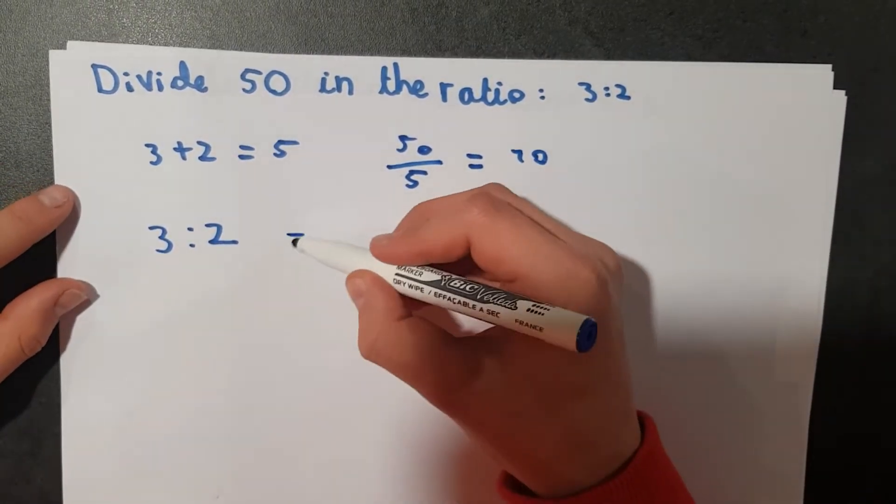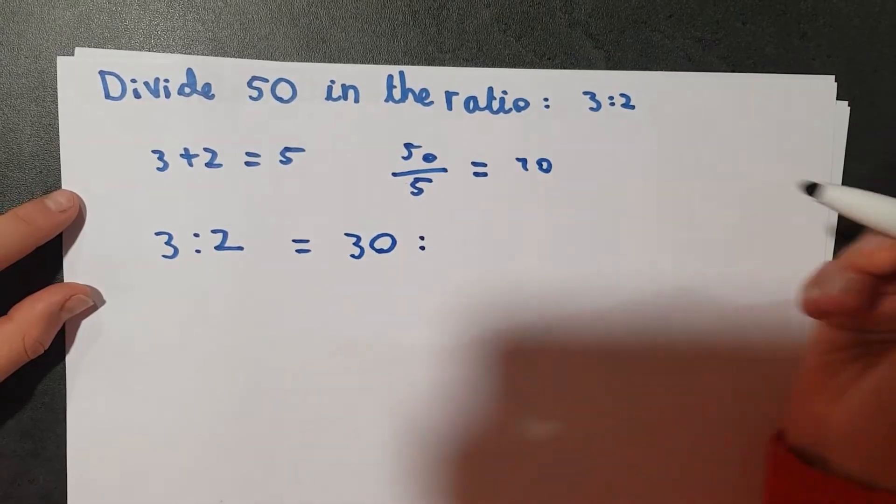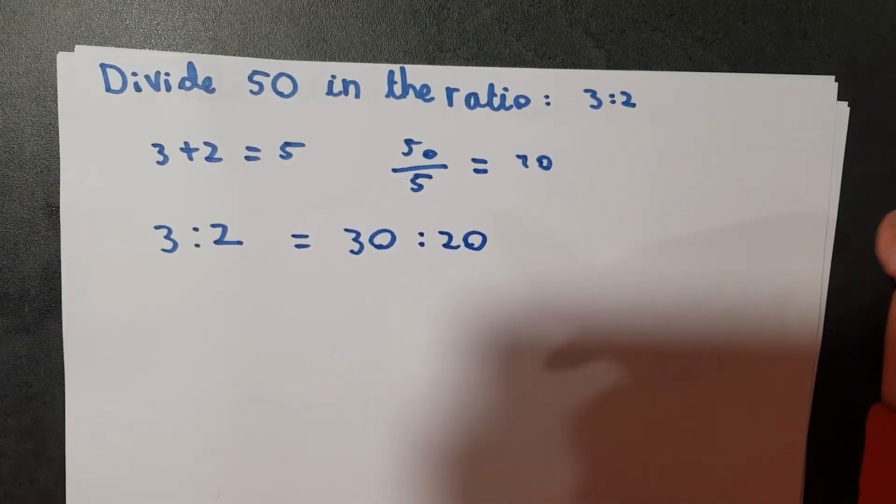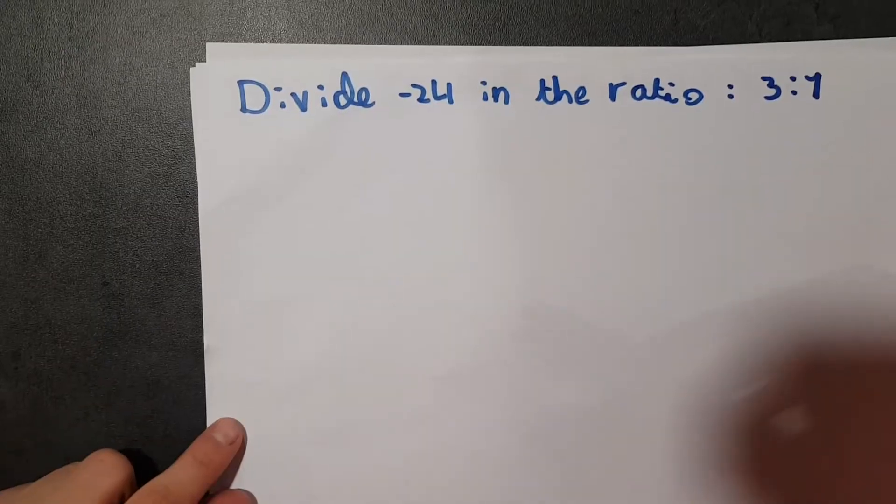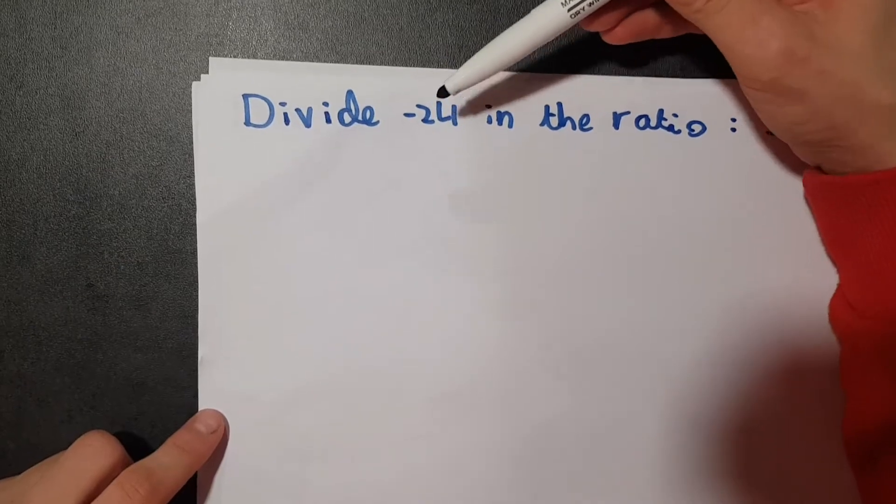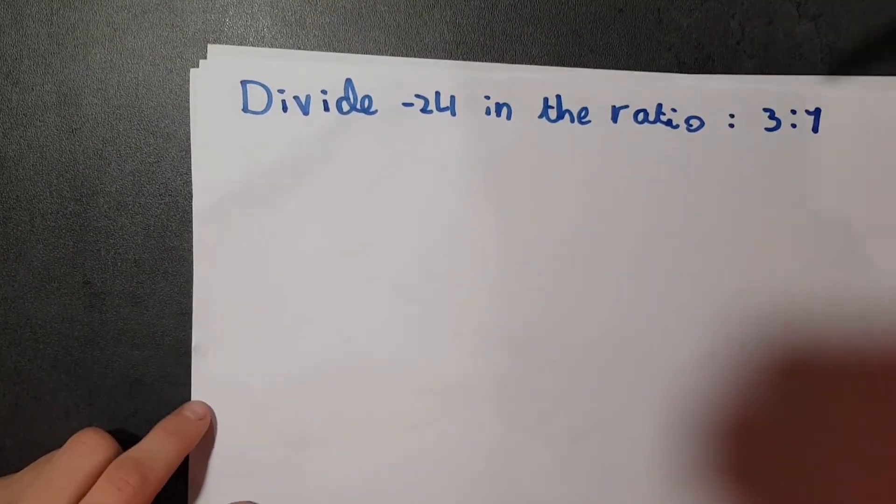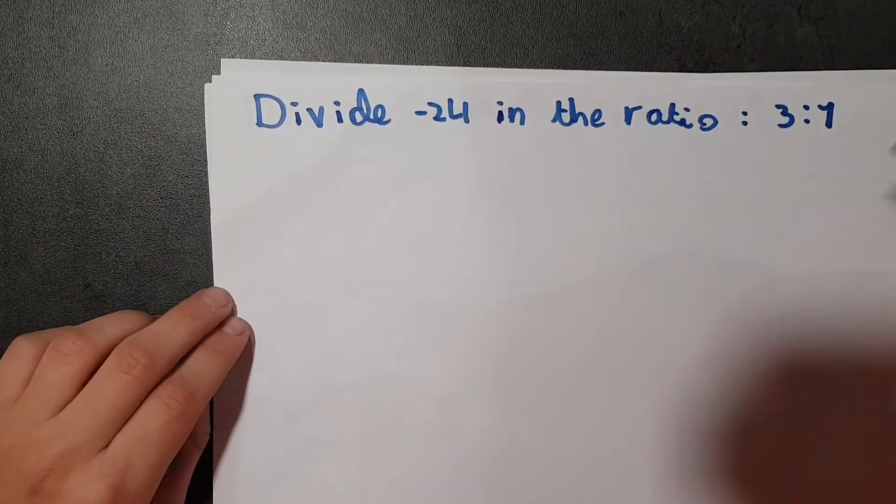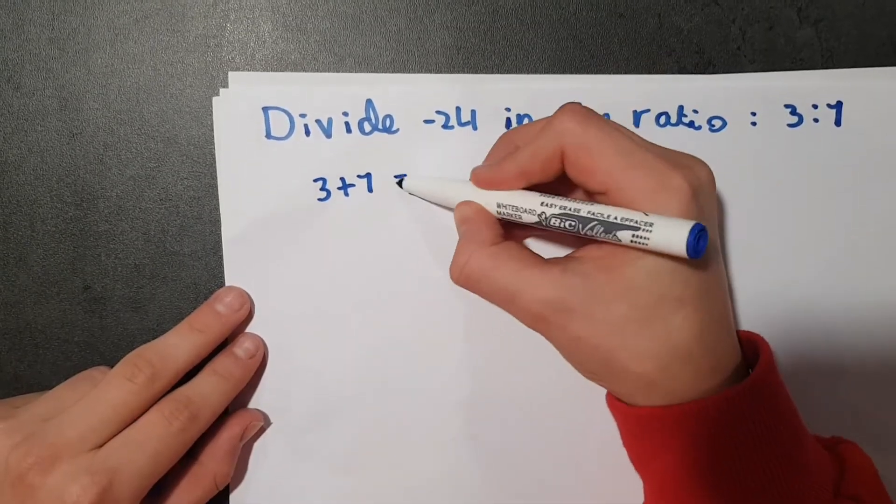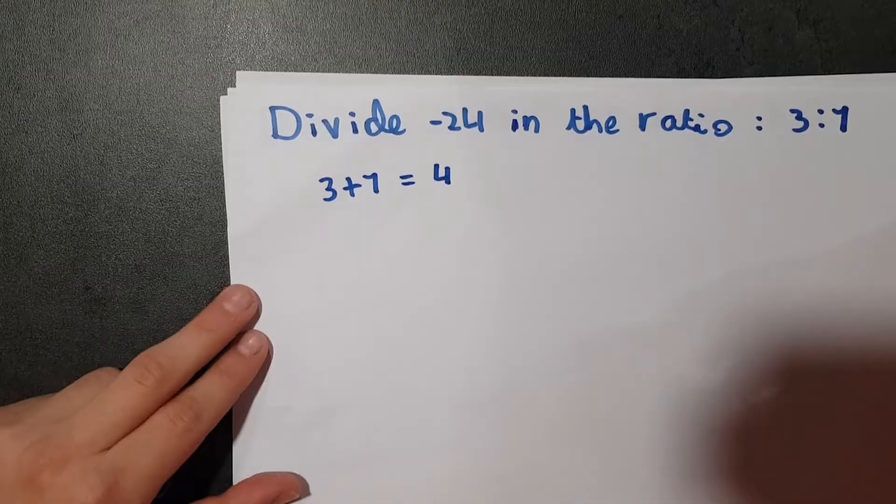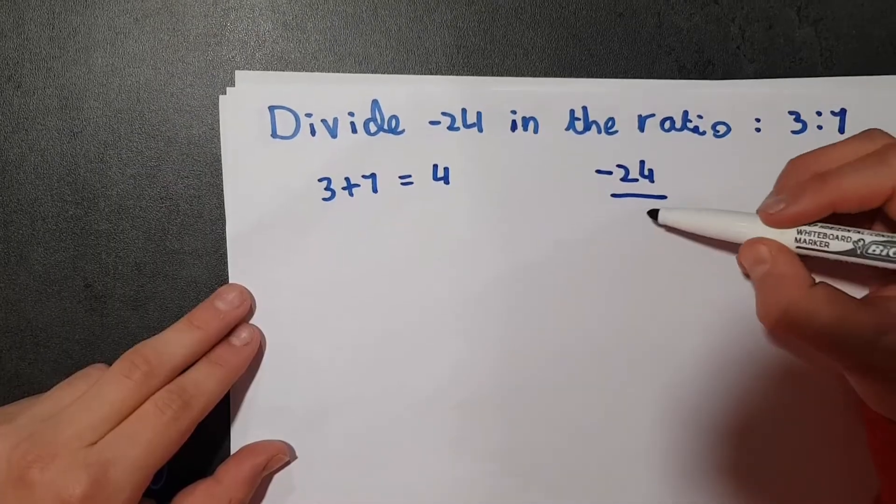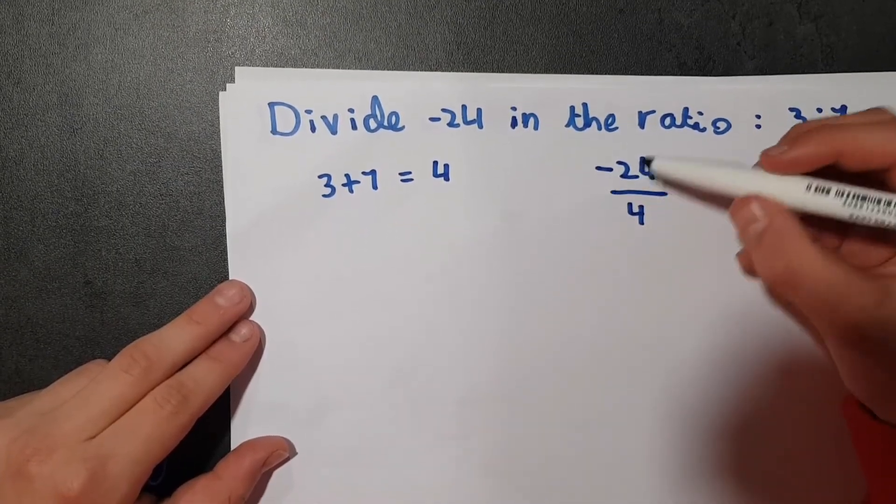Once again we can see here that we have another ratio, but this time it is a negative number. This is minus 24, so it's negative. Now it's basically the same as last time, so 3 plus 1 equals 4. And now you must divide 24 by 4, well negative 24 divided by 4. So easily we can see this makes minus 6.